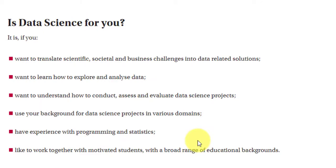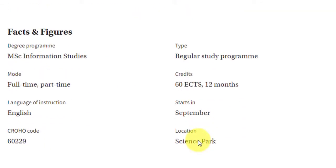There is also a question: is data science for you? The degree offered is MSc Information Studies. It's available both full-time and part-time. Language of instruction is English. The Croho code is the central register of higher education in the Netherlands. The course is 60 European credits — that is one year — and it starts in September, so fall intake. Location is Science Park, their campus.